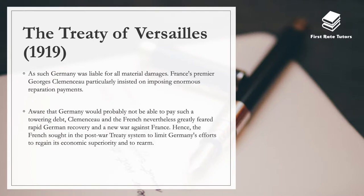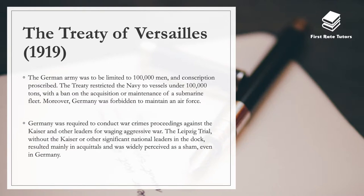Germany was seen as liable for all material damages as a result of the war, having accepted the war guilt clause. France's leader Georges Clemenceau particularly insisted on imposing enormous reparation payments. Aware that Germany would probably not be able to pay such a towering debt, Clemenceau and the French nevertheless greatly feared a rapid German recovery and a new war against France. Hence the French sought the post-war treaty system to limit Germany's economic recovery and rearmament. As a result, the German army was limited to 100,000 men and conscription was restricted — meaning over 1.5 million German soldiers essentially became unemployed.